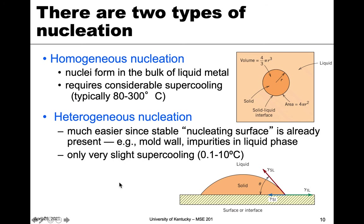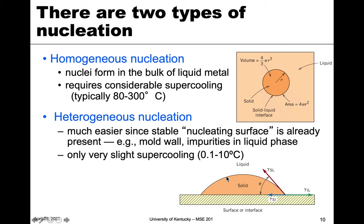There is another form of nucleation which is much more common: heterogeneous nucleation. In this case, the solid forms from the liquid around a surface or interface — a nucleating surface. This could be the mold wall when casting a material, an impurity like a speck of dust, some type of particle, or things that are purposely added for nucleation purposes. This is a much more common phenomenon.